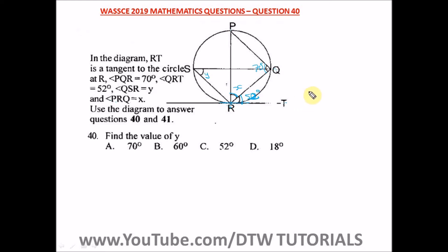The theorem states that the angle between a tangent to a circle and a chord drawn from the point of contact is equal to the angle in the alternate segment. So this angle — between the tangent and this chord drawn from the point of contact — is equal to the angle in the alternate segment.